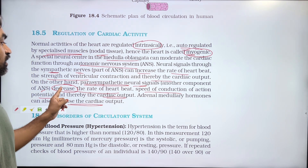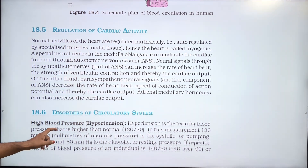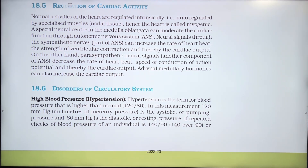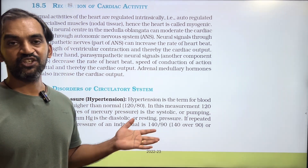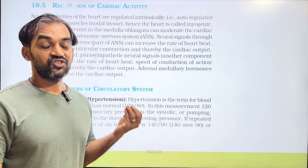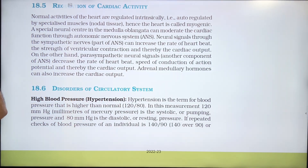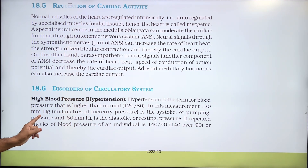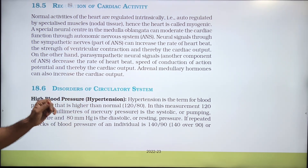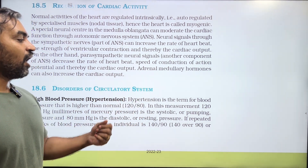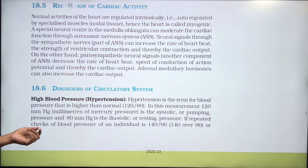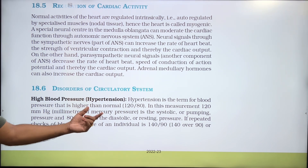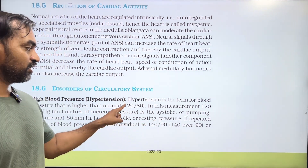Parasympathetic neural signals decrease cardiac output. The pumping pressure is 120 mmHg, which is the systolic or pumping pressure, and 80 mmHg is the diastolic or resting pressure.